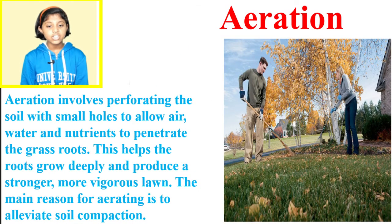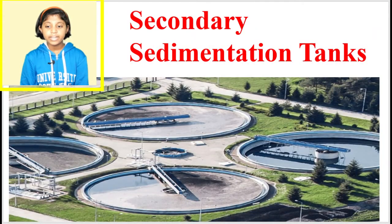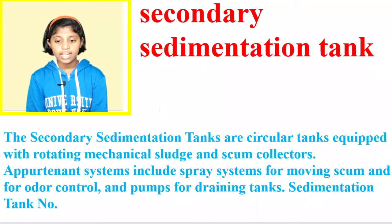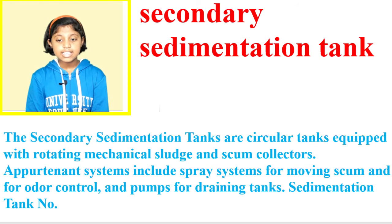Aeration involves perforating the soil with small holes to allow air, water and nutrients to penetrate the grass roots. This helps the roots grow deeply and produce a stronger, more vigorous lawn. The main reason for aerating is to alleviate soil compaction. The secondary sedimentation tanks are circular tanks equipped with rotating mechanical sludge and scum collectors. A treatment system includes a spray system for moving scum and for odor control.